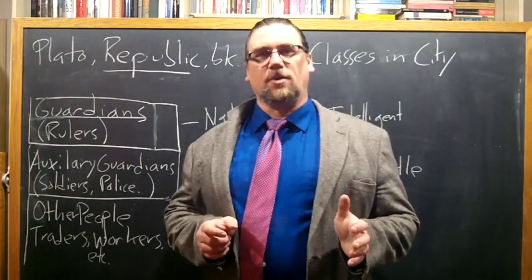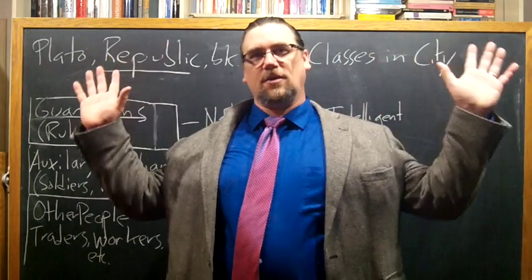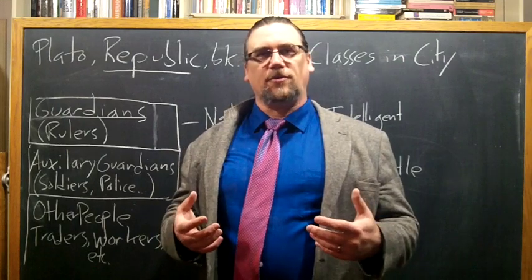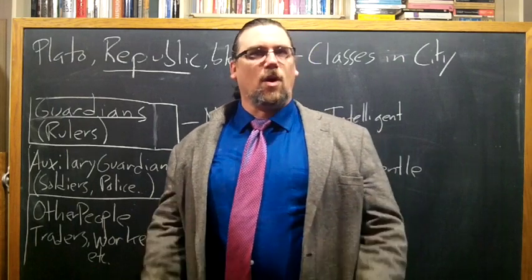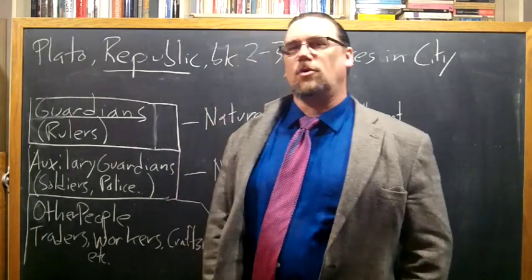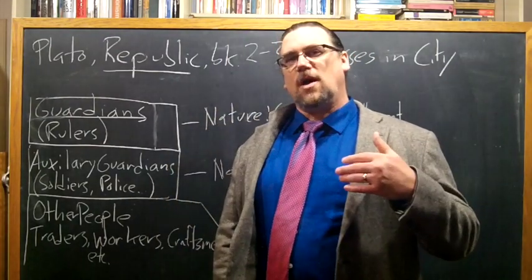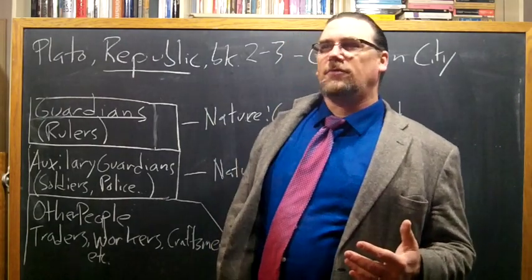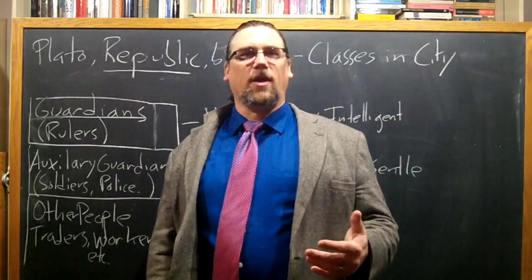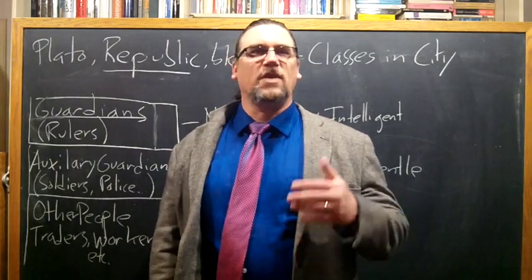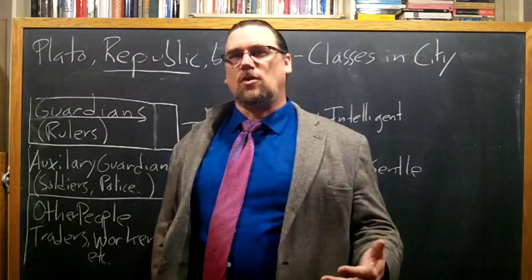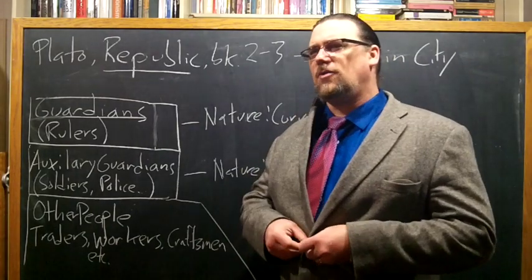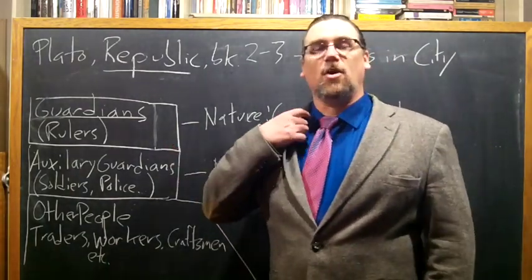As Plato has Socrates sketch out this ideal city, this ideal human community that responds to the kinds of needs and wants and desires that are part of the human condition, we find that Plato proposes a class system. It's not a class system in the sense that we're used to thinking about, because we tend to think in terms of income or social classes. There's a little bit of that here, except that interestingly enough, the people who are at the top don't make any money.